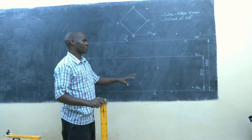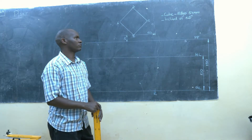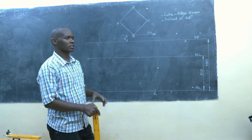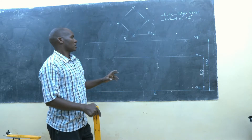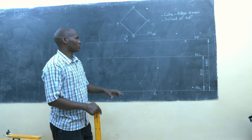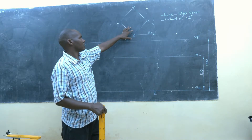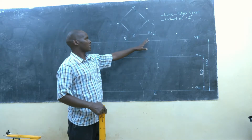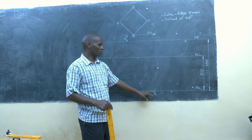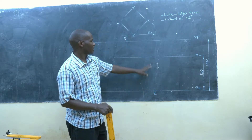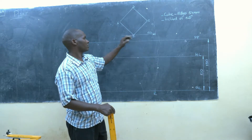Those are the requirements that you've been given, and we are required to come up with a two-point perspective of a cube which is 50mm and inclined at an angle of 45 degrees. We are also told that the cube is 60mm from the spectator — the lowest corner of the cube's plan is 60mm from the spectator.